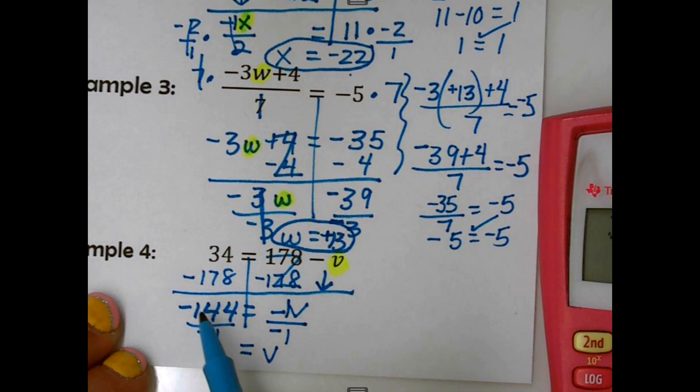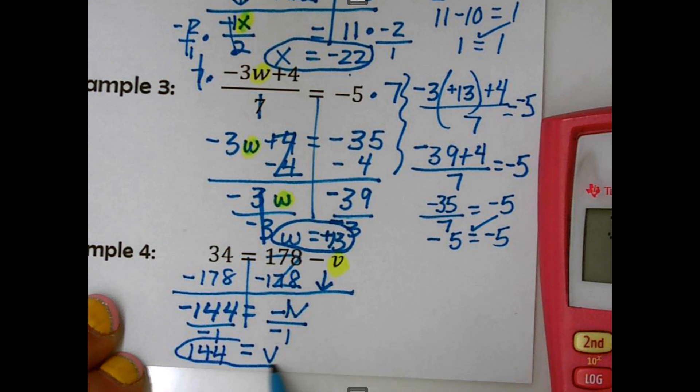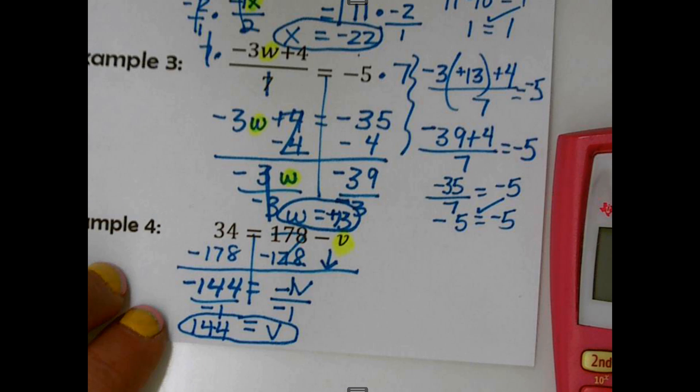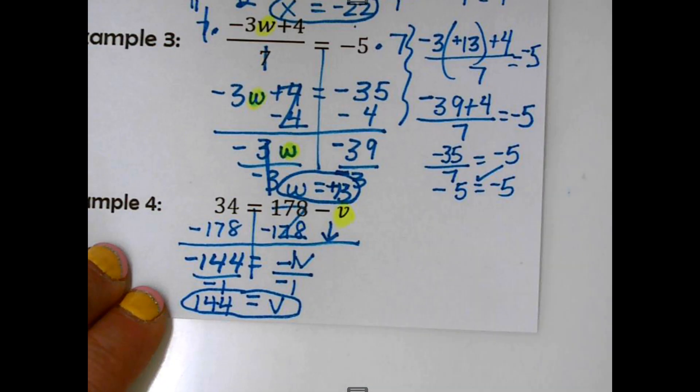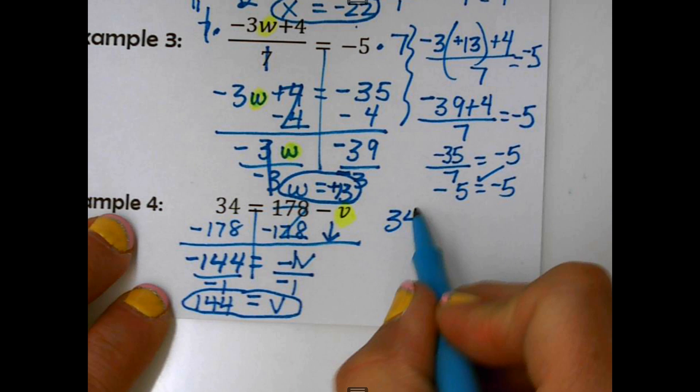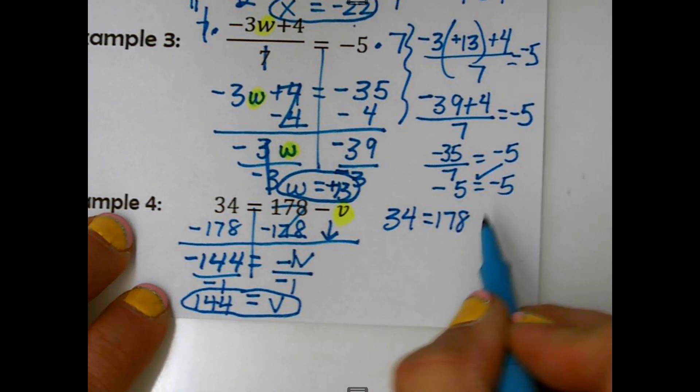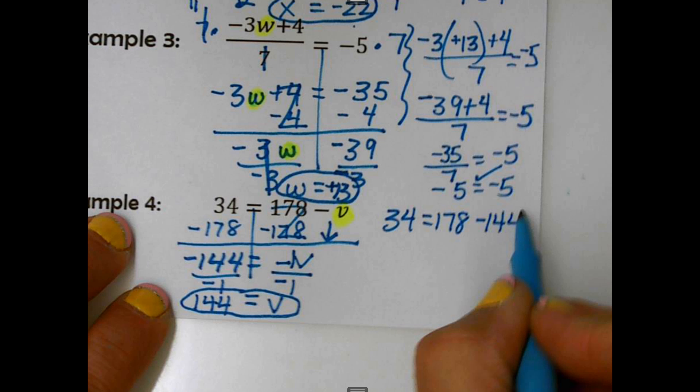All right. Let me slide this up a little bit. I'm going to substitute in 34 equals 178 minus 144. Remember, I put that in parentheses. And if I were to type that in or I could do it mentally, but I would get 34 equals 34. That's my check.